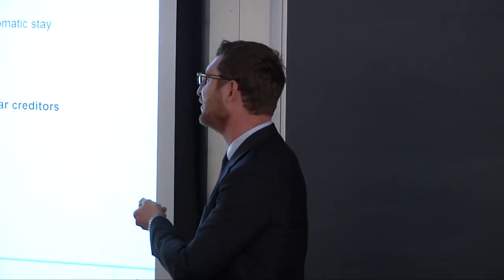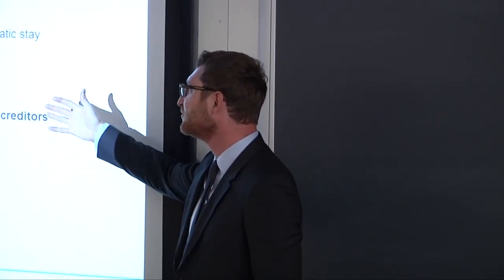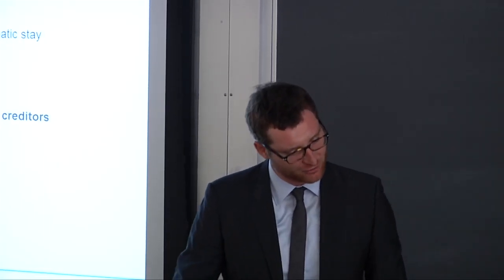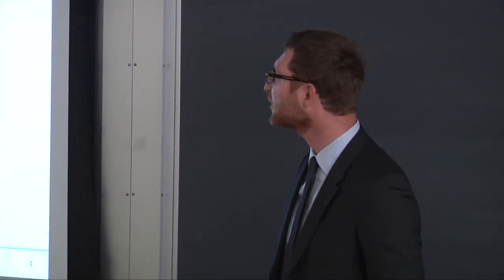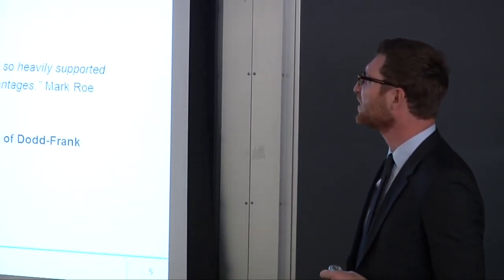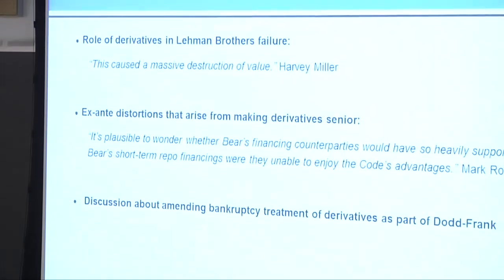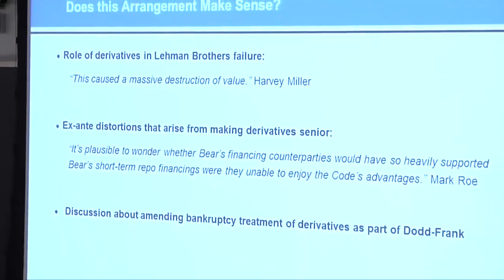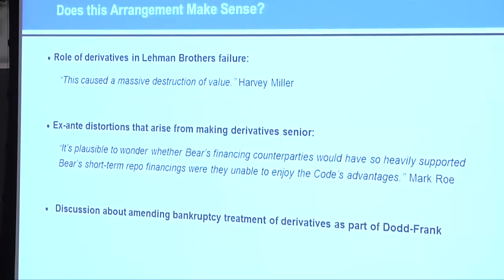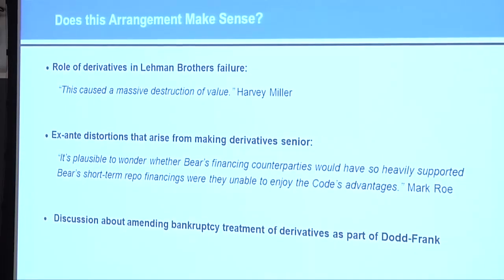To summarize, what these rules mean is that derivative counterparties usually get paid before almost anybody else. The question of this research agenda is to ask whether, looking at this from an economic standpoint, this rule makes sense. There's been some discussion on this, and I'll share a couple of quotes showing some of the arguments that have been made.